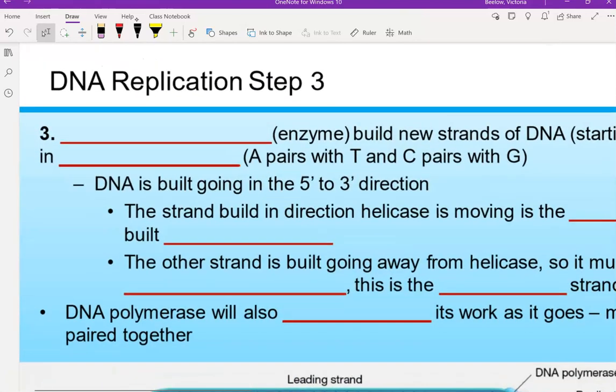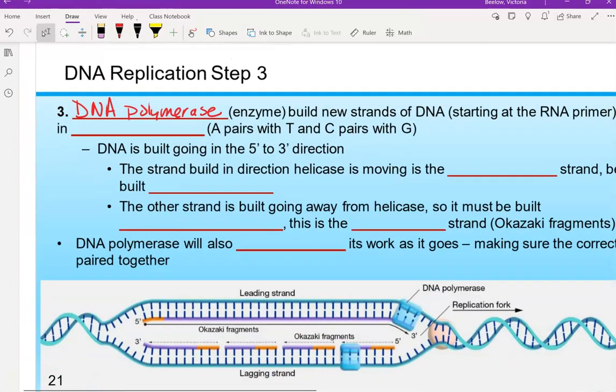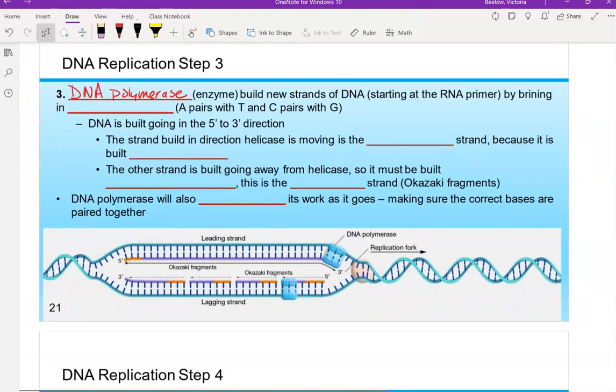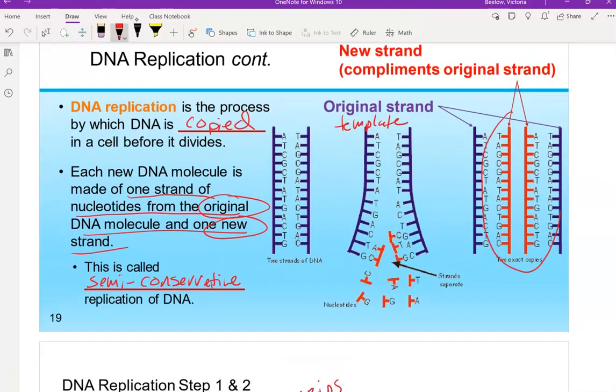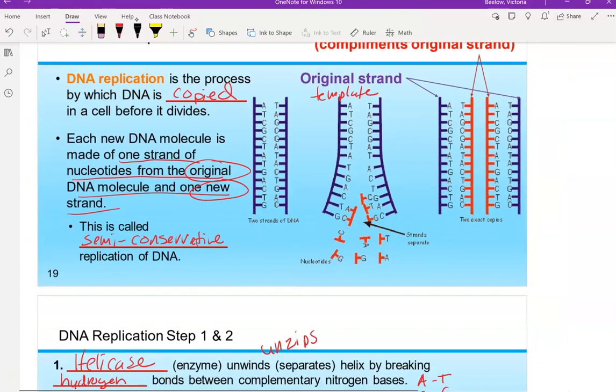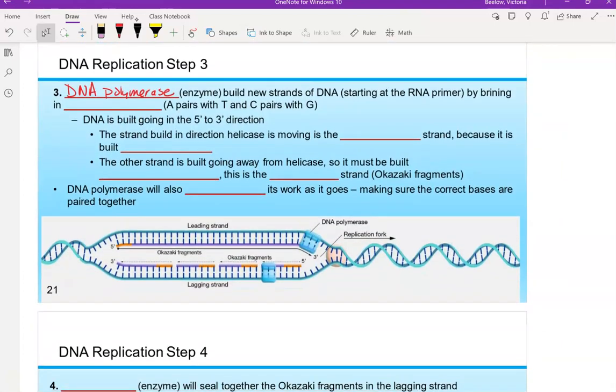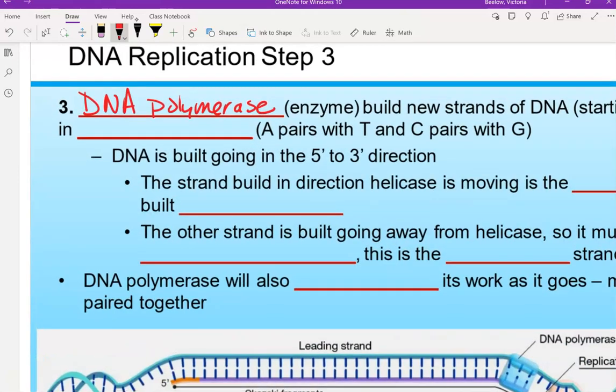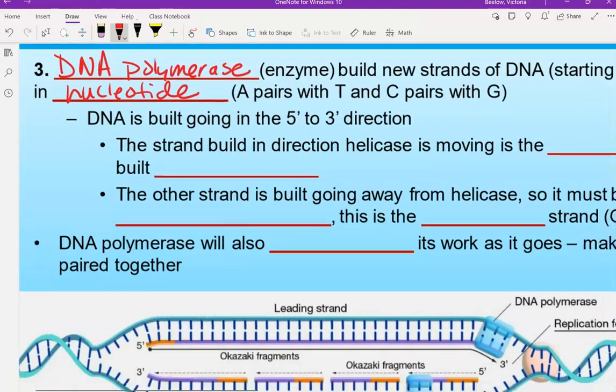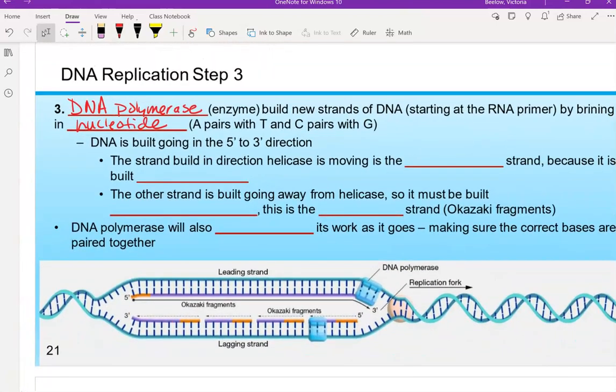So the main star, so to speak, of DNA replication is an enzyme called DNA polymerase. Remember the prefix poly means many. So this is going to build our new strands of DNA. This is what's building those strands that you see in red. Bringing in all of these little pieces, those are the nucleotides, the monomer for DNA. So we're going to start building this new strand. We're starting at the RNA primer. And we're bringing in those nucleotides. Remember, a nucleotide is made up of the sugar, which is deoxyribose, the phosphate group, and then one of those nitrogen bases. And we're making sure that we're pairing the nitrogen bases correctly with each other.